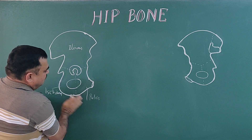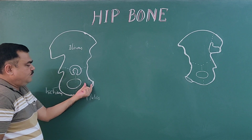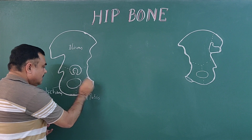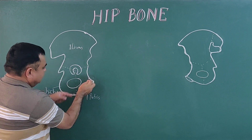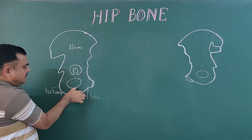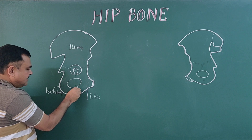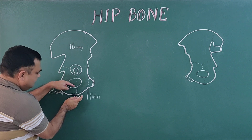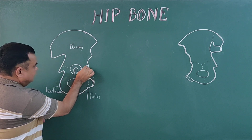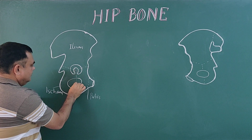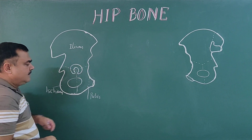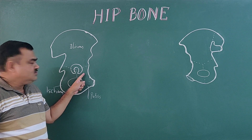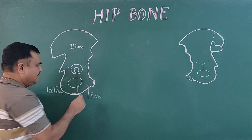This pubic bone has a body and two rami. This is one ramus and this is another ramus. Here is the junction of the ischium and pubic ramus, so this part is pubic. It has a body and two rami — this is the superior ramus and this is the inferior ramus.